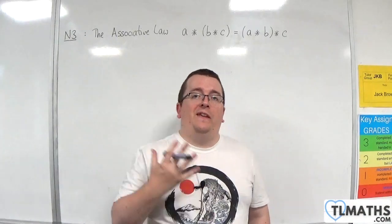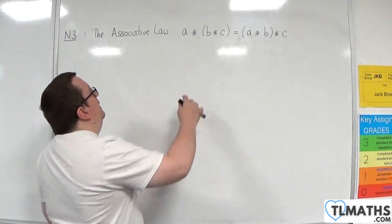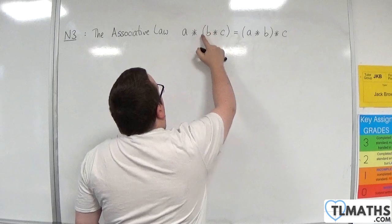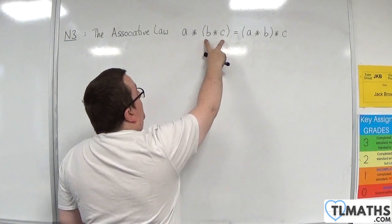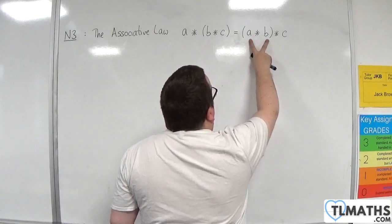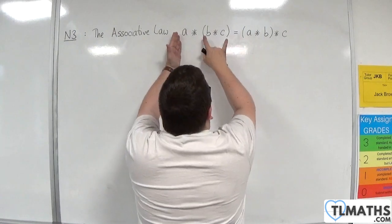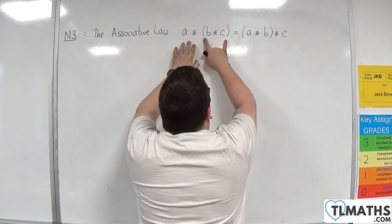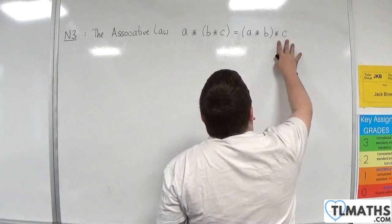In this video, I want to consider the associative law. The associative law says that A star B star C, where B star C is in a bracket, meaning we've got to do it first, is equal to A star B in a bracket, star C. So on the left-hand side, we're doing B and C first, then A, and on the right-hand side, we're doing A and B first, and then C.